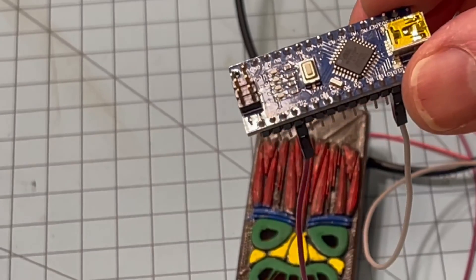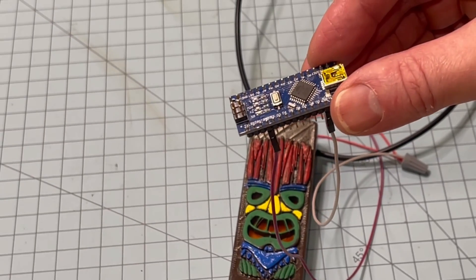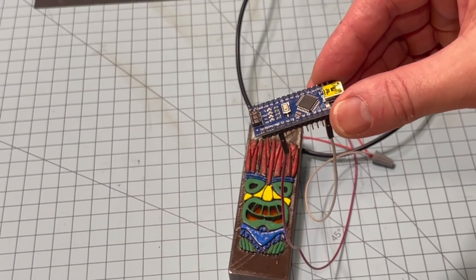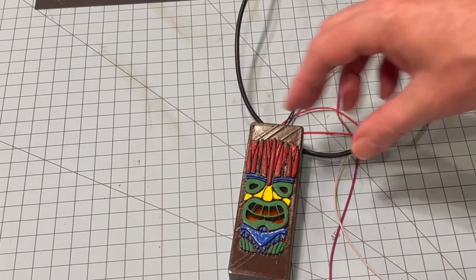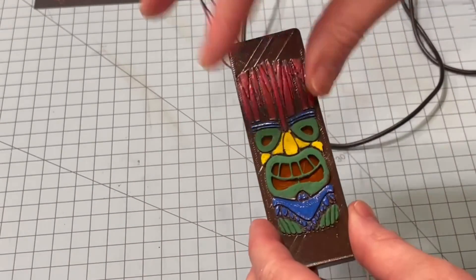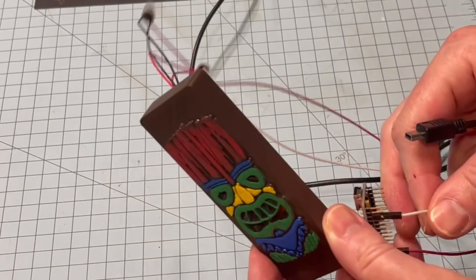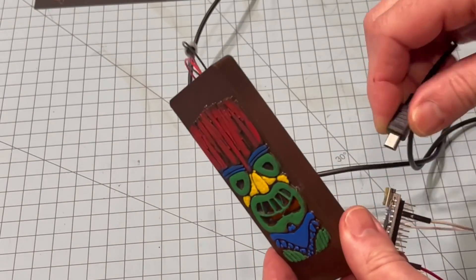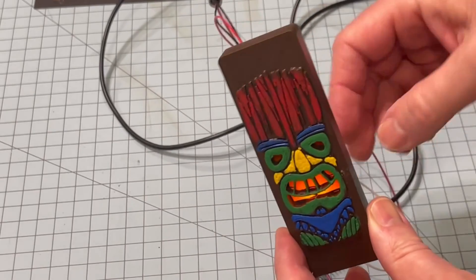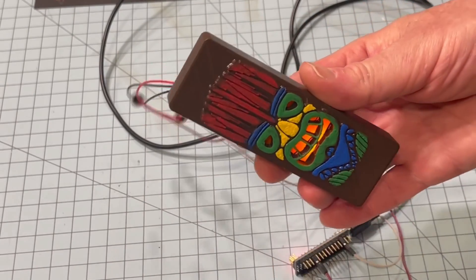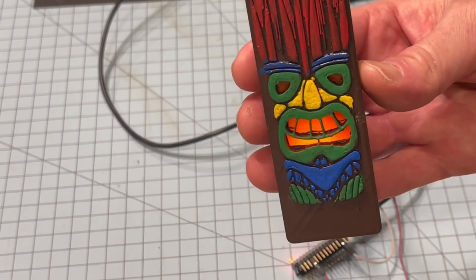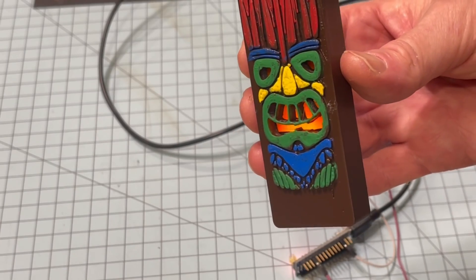So now when we power on the Arduino, we're going to plug this in here. You can even see how bright it is already. Now hold it just so you can see it flicker. Look at that.